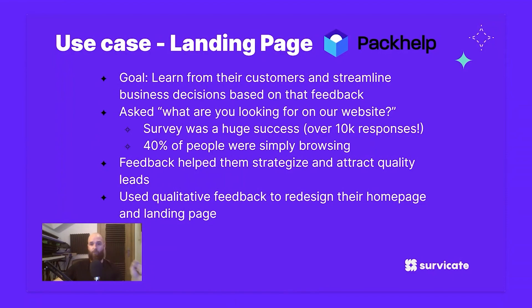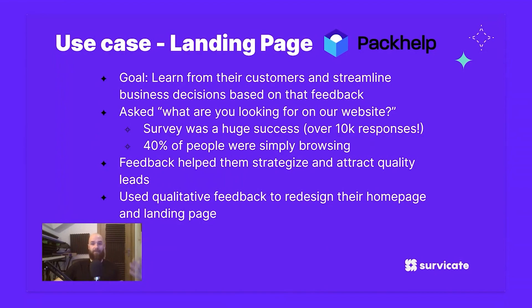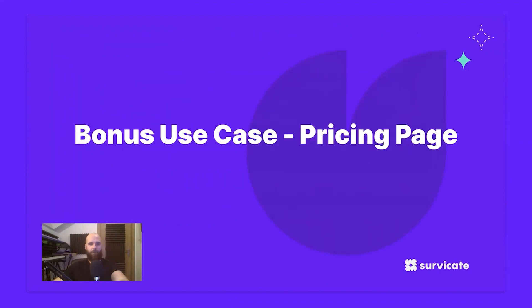They also found that many visitors simply had a hard time finding what they needed. This gave them a chance to regroup and strategize — they used qualitative feedback to redesign their homepage and high-traffic landing pages, then ran A/B tests to track whether changes were moving in the right direction. Once they saw how easy it was, they put out more surveys — including in-product surveys — racking up over 30,000 responses across around 50 surveys. One question about visitor intent ultimately helped them identify low-quality traffic and optimize conversion rates.